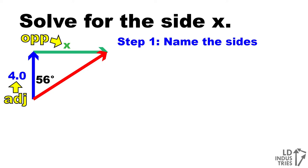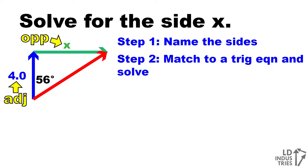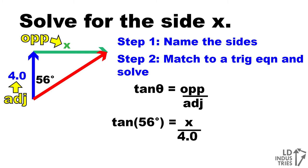Once you've named the sides, step two is to match those sides to a trig equation and go through and solve it. So in this case, because I have opposite and adjacent, I'm going to use the tan ratio. Tan of the angle theta equals opposite over adjacent. I can put in 56 degrees for the angle theta. The opposite side is x and the adjacent side is 4.0.